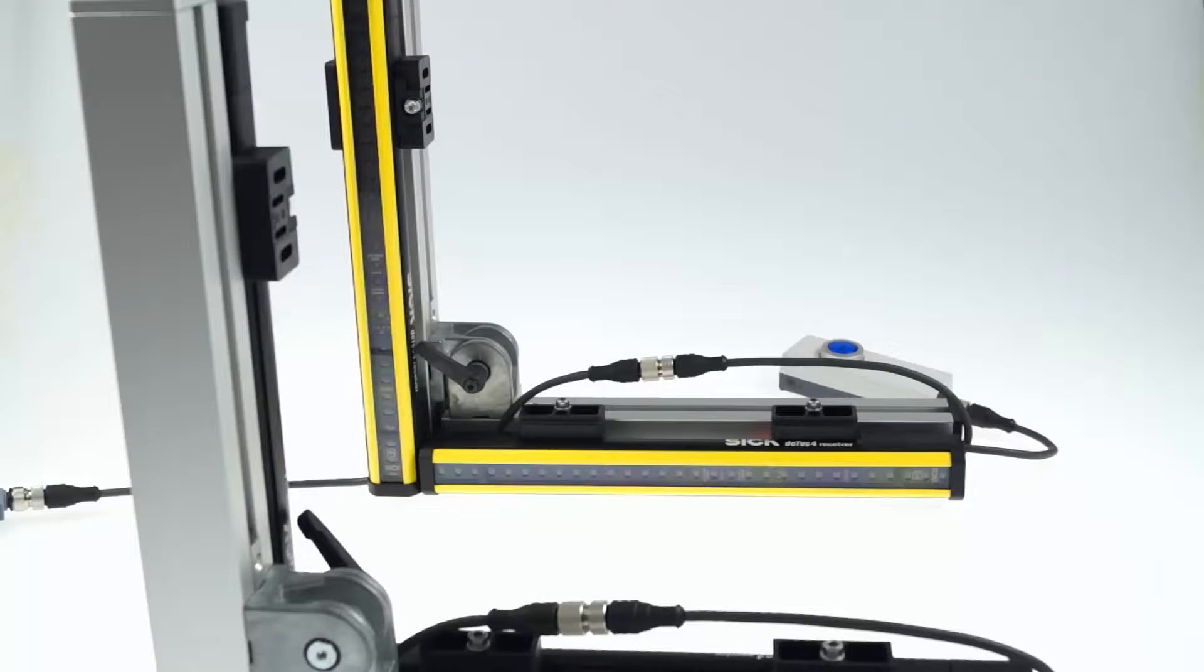It is also possible to configure all functionalities previously shown in one go. Here we have our system in the default state. No functions have been configured yet. However, we already connected the devices to a host guest cascade, the reset button to the last receiver as well as our relay on the EDM input.